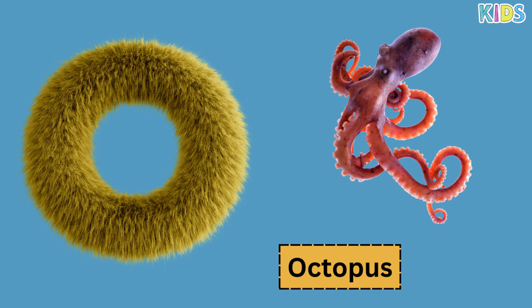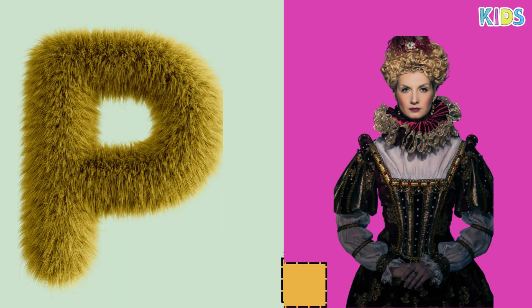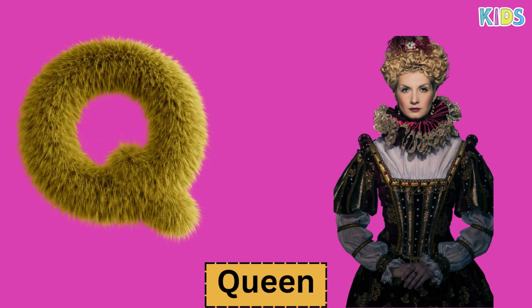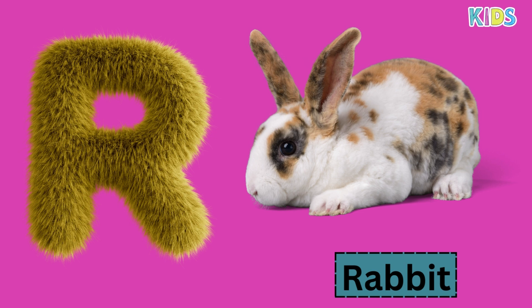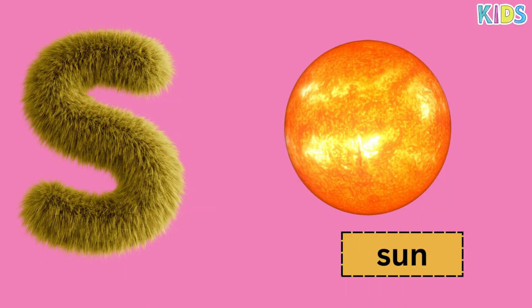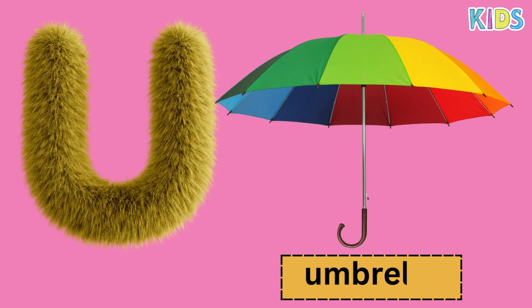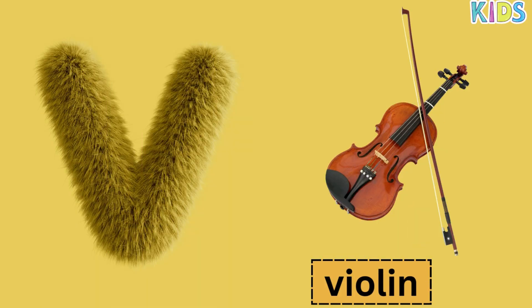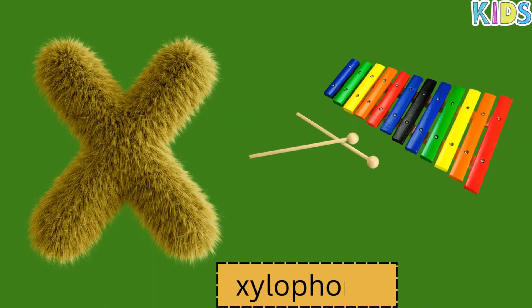E for Penguin, Q for Queen, R for Rabbit, S for Sun, T for Tiger, U for Umbrella, V for Violin, W for Whale, X for Cellophane.